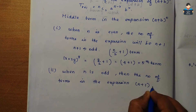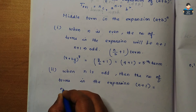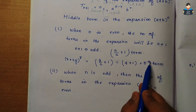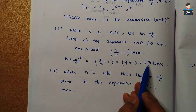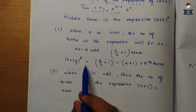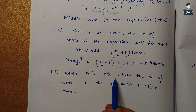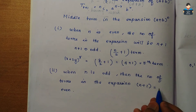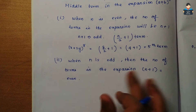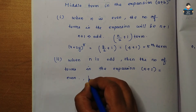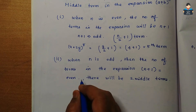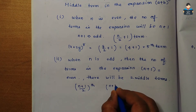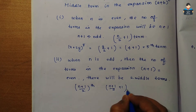When n is odd, n + 1 is even. The number of terms in the expansion is n + 1 (even), so there will be 2 middle terms: the (n+1)/2 th term and the ((n+1)/2 + 1)th term.